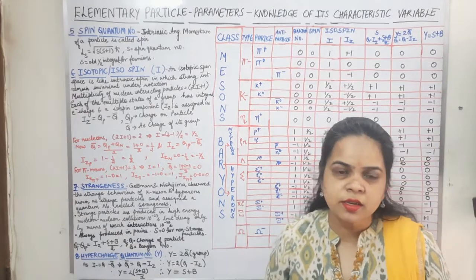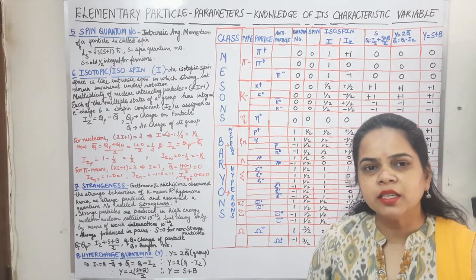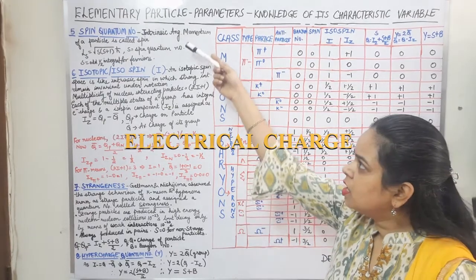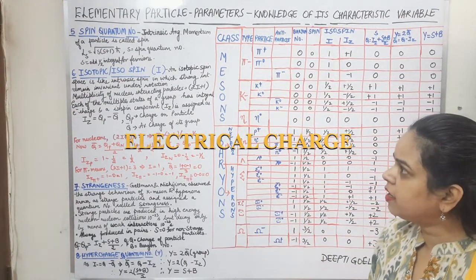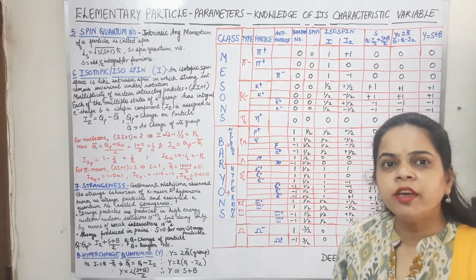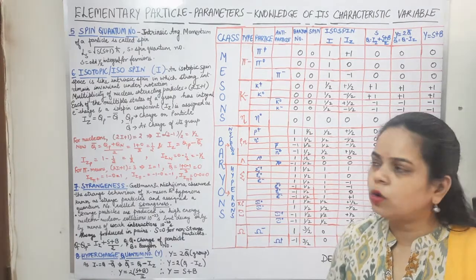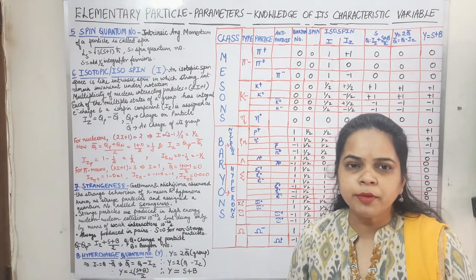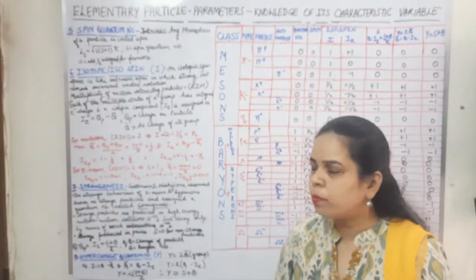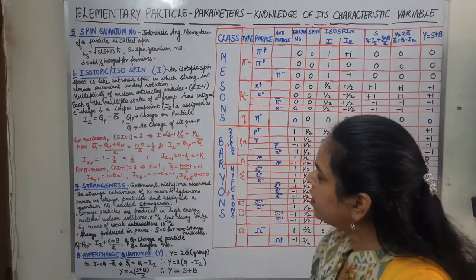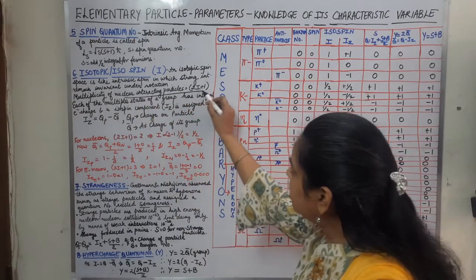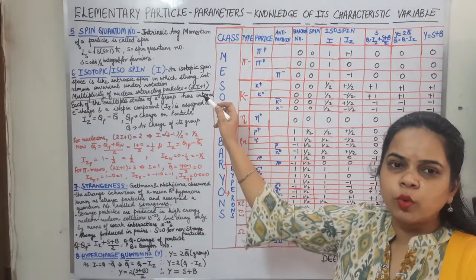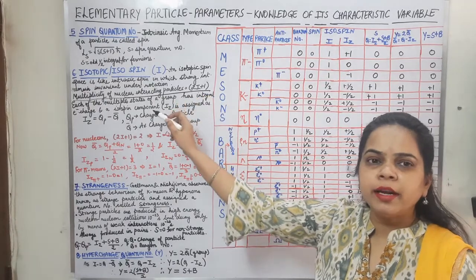We have already discussed the meson and baryon families — which were the particles and which were the antiparticles. An isotopic spin space is just like the spin quantum number space in which strong interactions are dealt, and the strong interactions remain invariant in the isotopic spin space also. We can calculate the multiplicity of a particular group. From the multiplicity we can calculate the isotopic spin. The multiplicity of a nuclear interacting particle is given by 2I+1, where the I value can be calculated from the multiplicity.